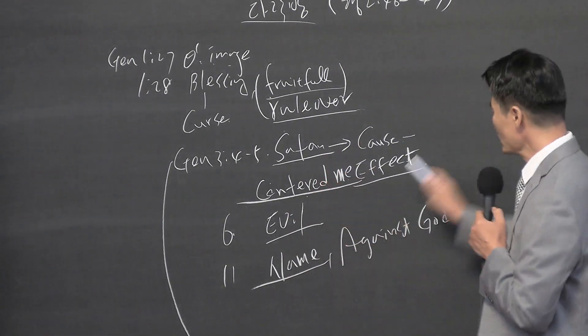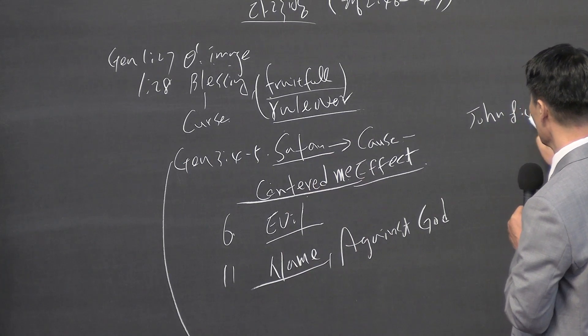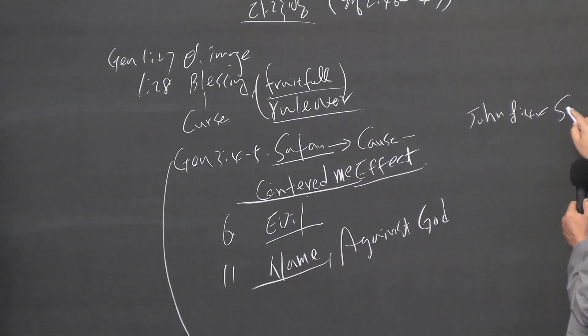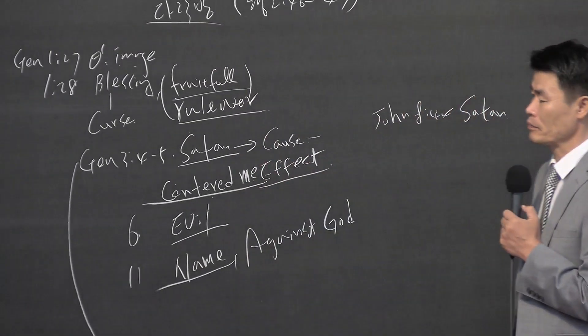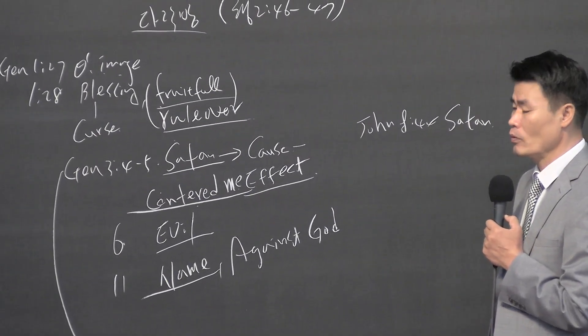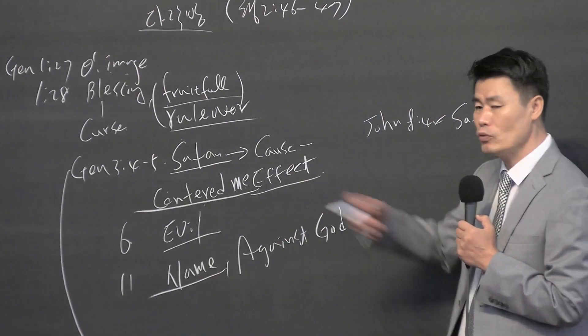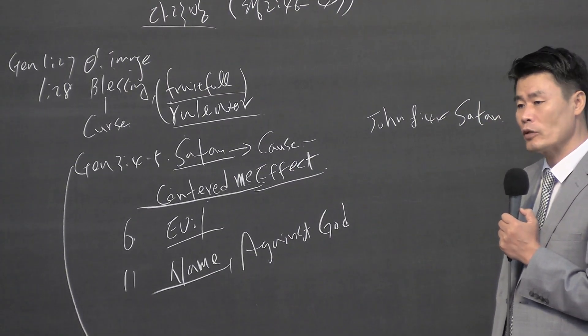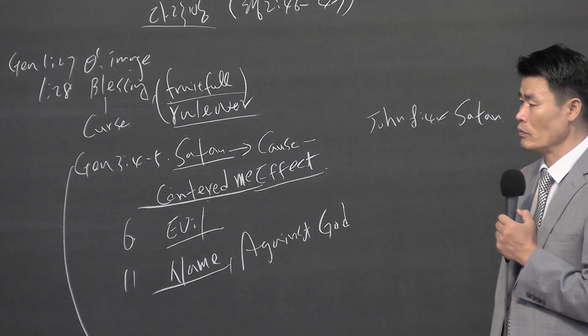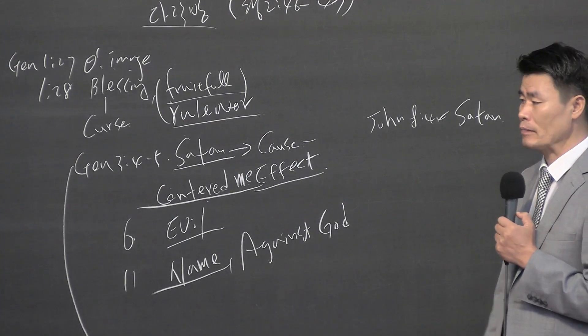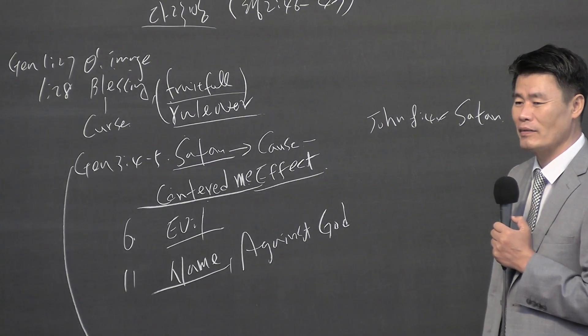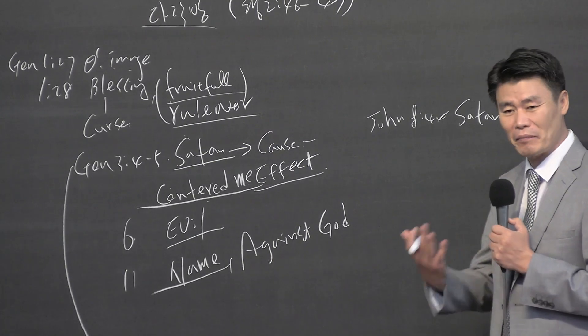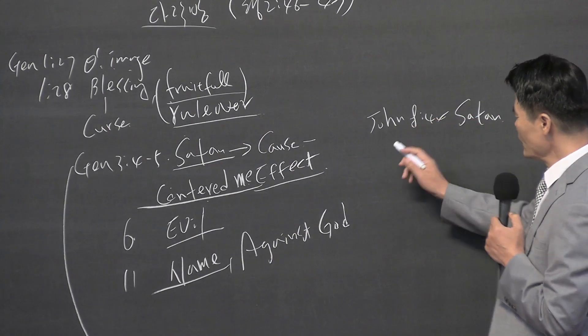Because of these problems, John 8:44 states how we became complete slaves to Satan. When Satan works upon us, the evil spirits control our thoughts and minds. Why is it a problem? It's a problem because I could think of it as a problem. When it's not centered on myself, then it's no longer a problem. But in order for me to not be centered on myself, I have to die.